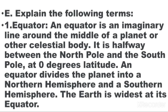Question number 4, explain the following terms. Number 1: Equator. An equator is an imaginary line around the middle of a planet or other celestial body. It is halfway between the North Pole and the South Pole at 0 degrees latitude. An equator divides the planet into a Northern Hemisphere and a Southern Hemisphere. The Earth is widest at its equator.